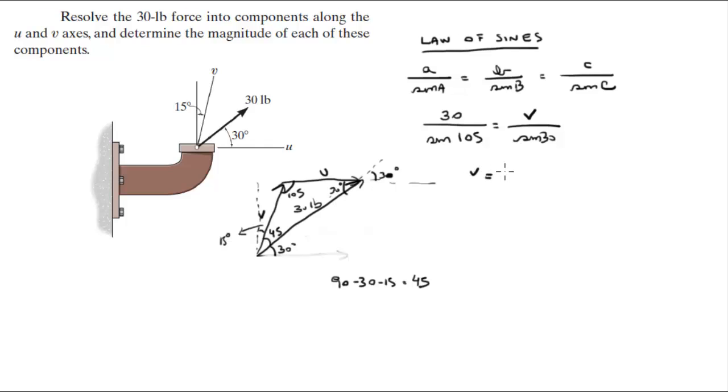So when you solve for V, you're going to get that V is equal to 15.52. And you can solve for U in the same manner: 30 over sine of 105 is equal to U over sine of 45.